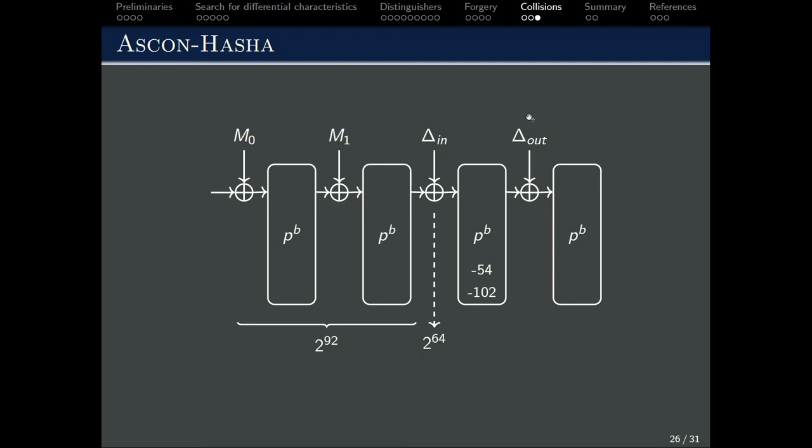Therefore, if we add delta out to this pair of messages, we will eliminate the difference, and therefore, we will construct a collision.